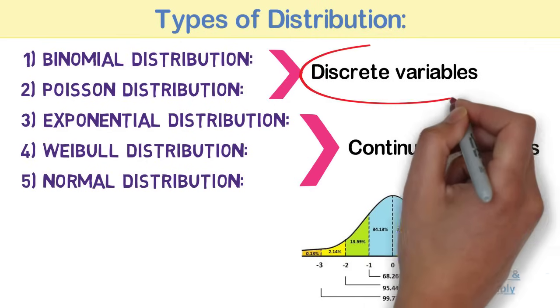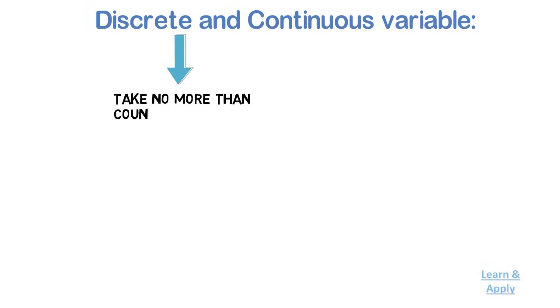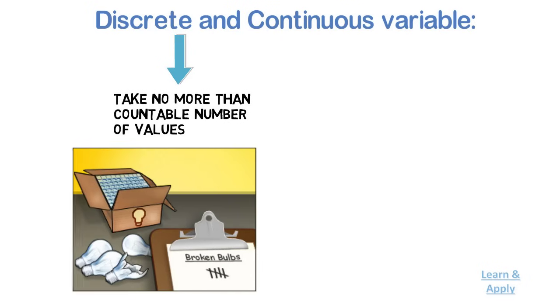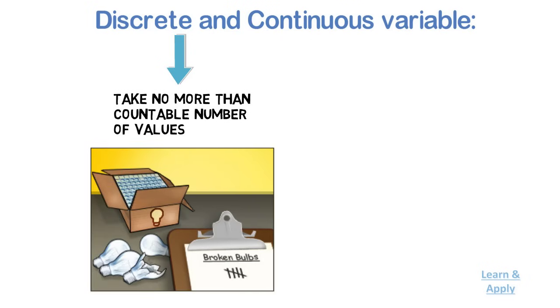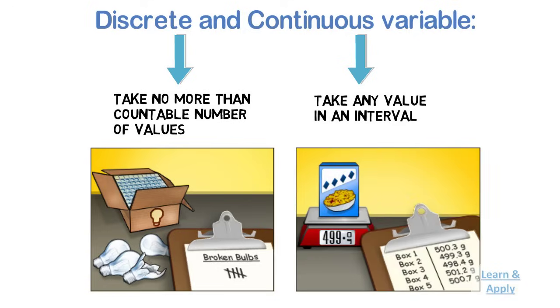I will explain distributions for discrete variables in this video. Discrete and Continuous Variable: a variable is discrete if it can take no more than a countable number of values — for example, the number of defective atoms in a sample of 20 atoms. A variable is continuous if it can take any value in an interval — for example, the weights from a sample of 20 cereal boxes.